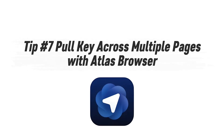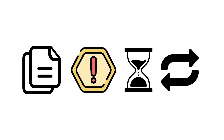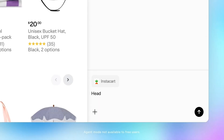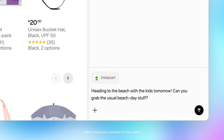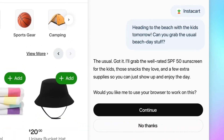Tip number seven: pull key insights across multiple pages with Atlas Browser. If you've ever had 10 tabs open trying to compare suppliers, pricing, or market research, you know how messy it gets. You copy-paste data between pages, lose context, and waste time jumping back and forth, all just to get a simple summary. With Atlas Browser, you can use the built-in ChatGPT sidebar and Agent Mode to gather insights from several web pages without leaving your tabs.